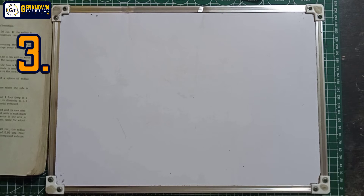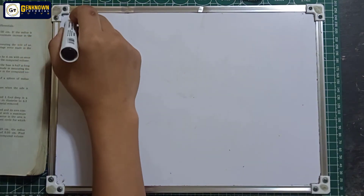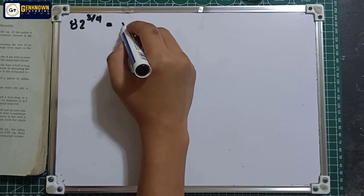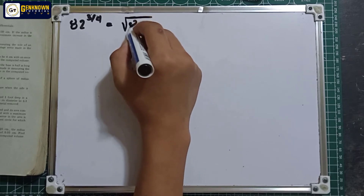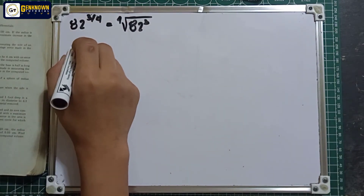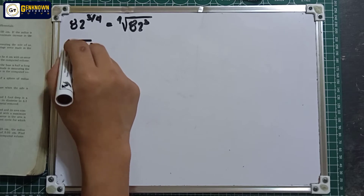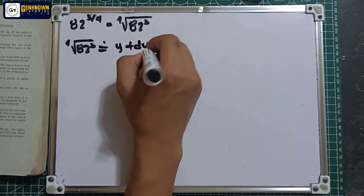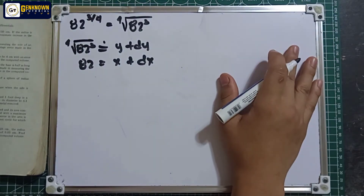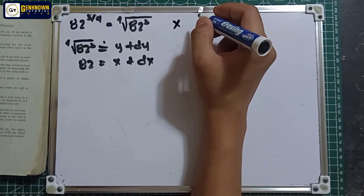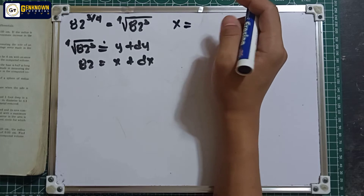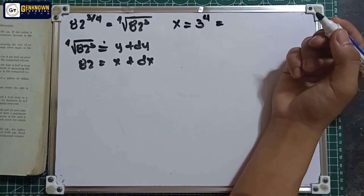Number 3: 82 raised to 3/4. Let's convert this to radical form: fourth root of 82 raised to 3. Let the fourth root of 82 cubed be approximately equal to y plus dy, and 82 equals x plus dx, where x is any number whose fourth power is nearest to 82. Since 3 raised to 4 equals 81, we use x equals 81.